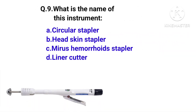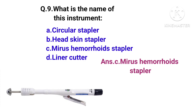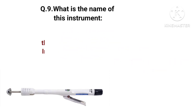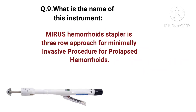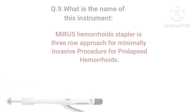Name of the following instrument: Circular Stapler, Heskin Stapler, Miras Hemorrhoid Stapler, or Linear Cutter? This instrument is the Miras Hemorrhoid Stapler. The Miras Hemorrhoid Stapler is a three-row stapler used as a minimally invasive procedure for prolapsed hemorrhoids.